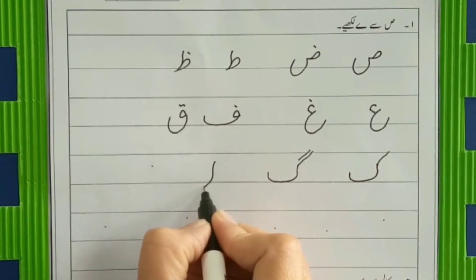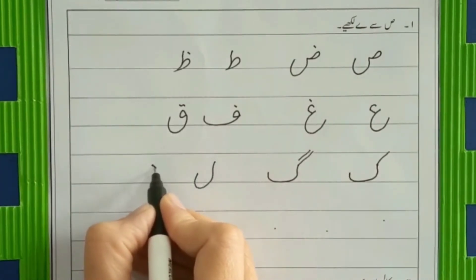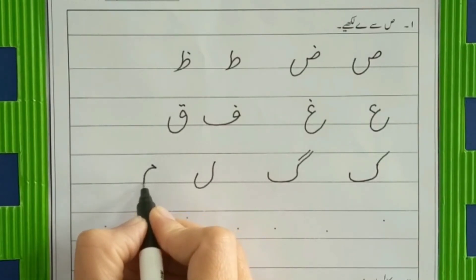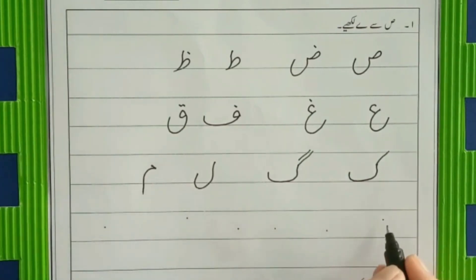Then laam, make a curvy alif. Meem. Are you following me? Yes. Make a curvy alif. Laam, meem, noon. Very nice. So calm down, make a big belly and one dot in it. Noon. Then we have wow.